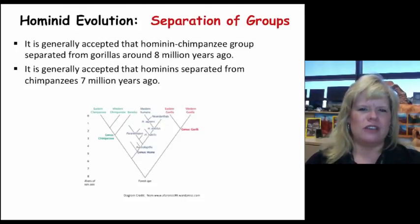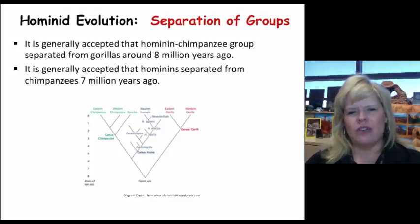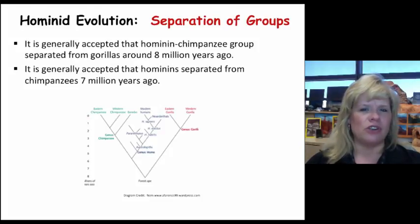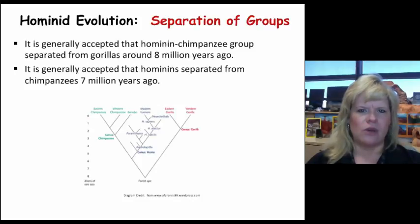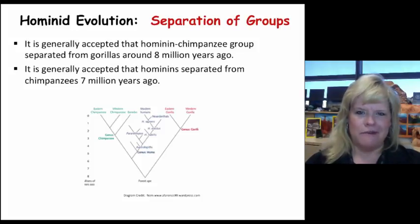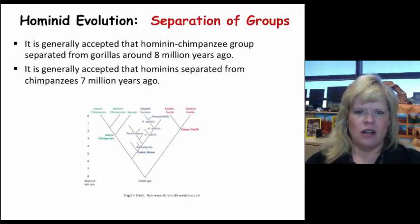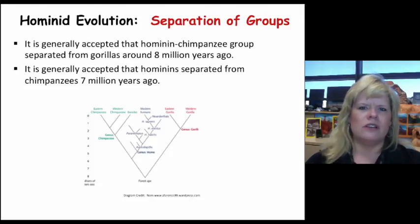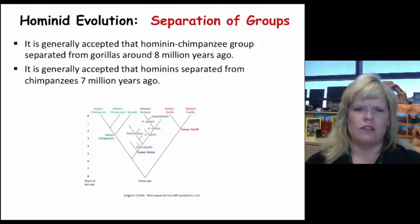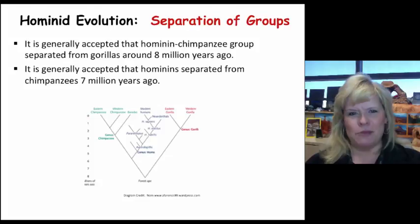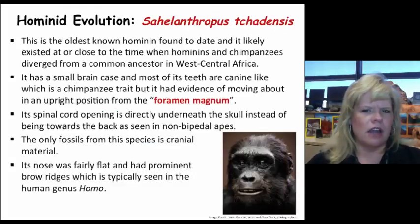The separation of hominin groups is distinctive in terms of fossil evidence. The hominin and chimpanzee groups separated from gorillas around 8 million years ago, and it's generally accepted that hominins separated from chimpanzees around 7 million years ago. Our closest living relative is the chimpanzee — and in the context of living groups including gorillas, chimpanzees, and humans, that 7-million-year timeframe is super important and will become clear as we go through this process.